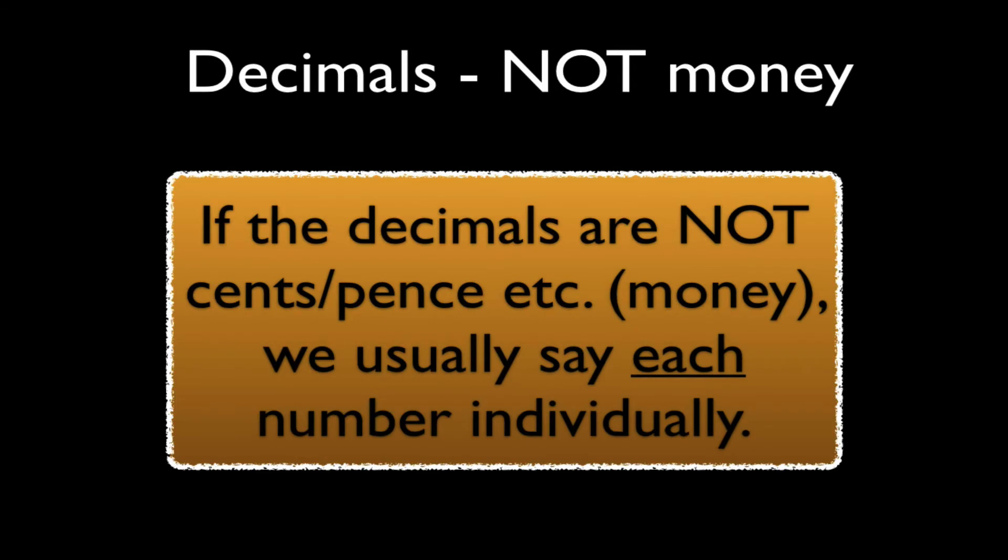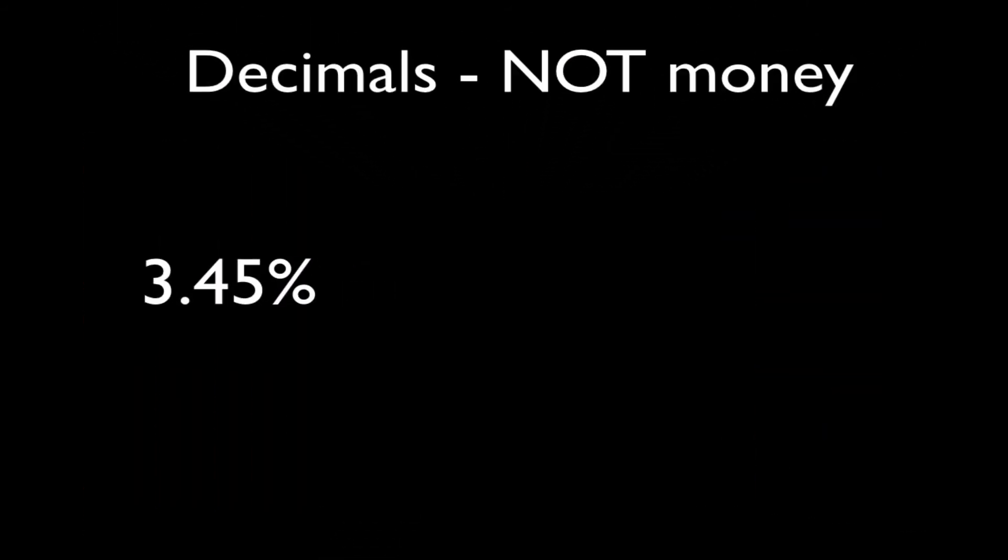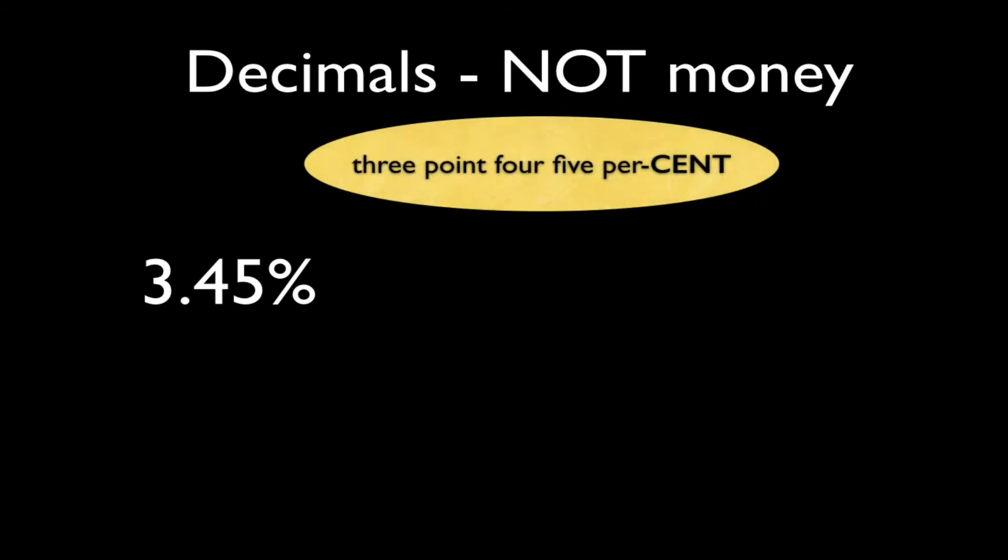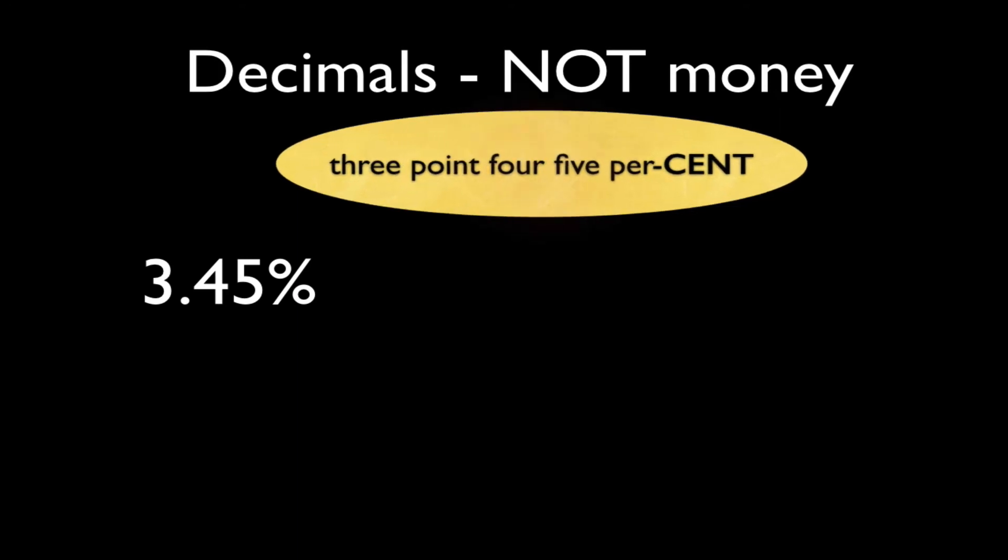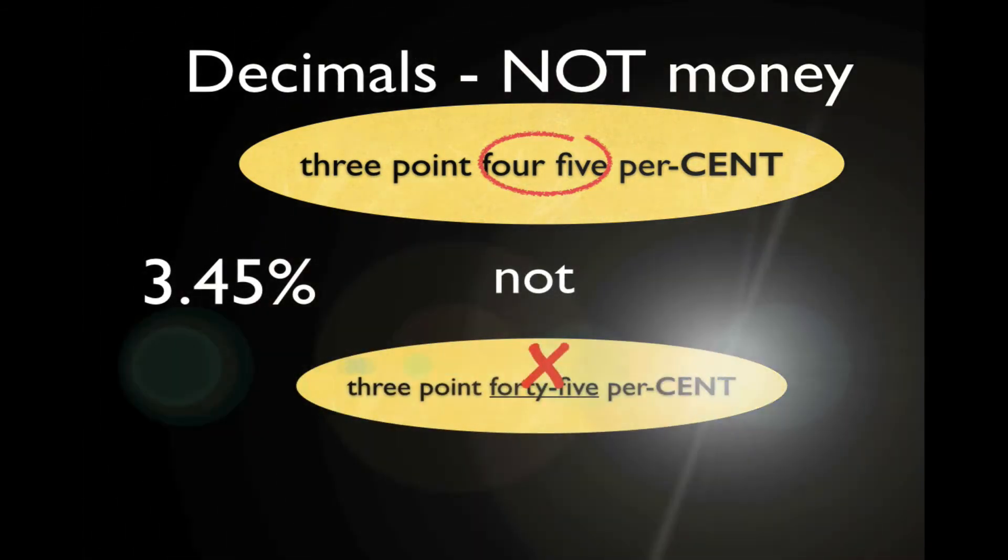Now if we're using other numbers that are not money, then generally each decimal number will be spoken by itself individually. So here we've got a percentage. So here we'll say three point four five percent. Three point four five percent. So four five. The decimal numbers are said individually. Four five, not forty-five.